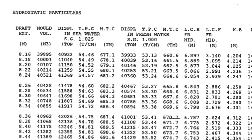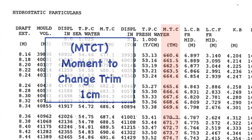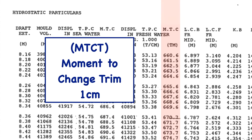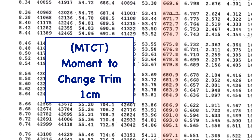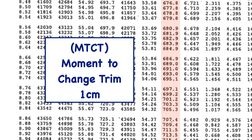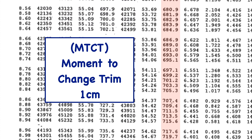If you look at the hydrostatic tables in your stability book, you're going to see a number called the MTC. MTC is given for every mean draft in both seawater and freshwater. What we're looking at here is called the moment to change trim by 1 cm, and it's the number that we're going to use to calculate our trim when we're moving weights around on board.